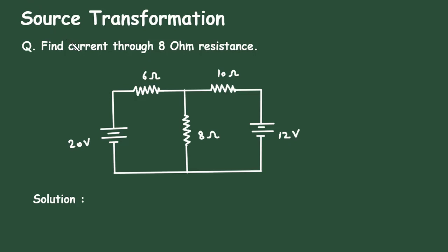To get the free notes of electrical circuits, check the link in the comment section and install the app for free. Source transformation question: find the current through the 8 ohm resistance by using the source transformation technique. Here in this circuit, we have to find the current through this 8 ohm.